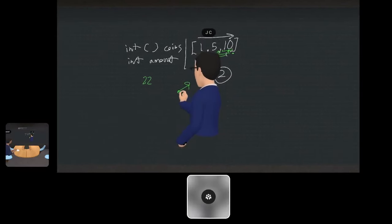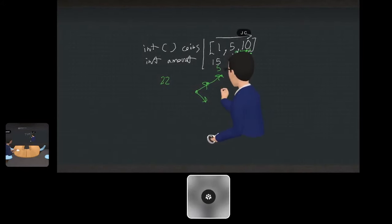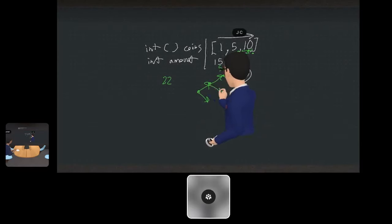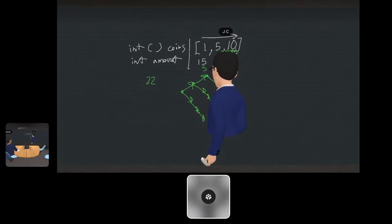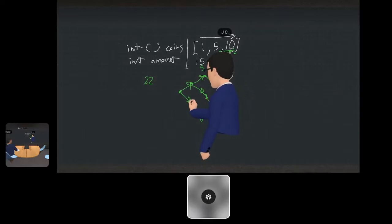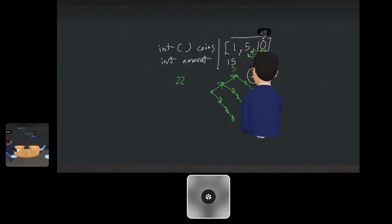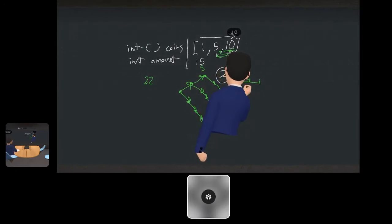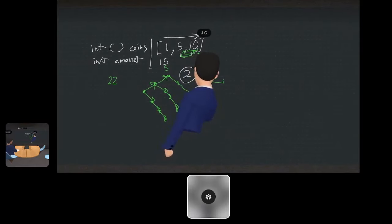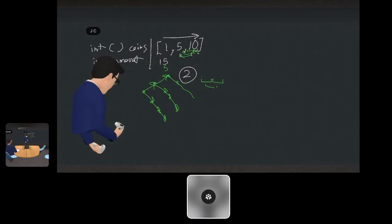At every step we could choose to either take the current coin or move on to the next coin. There's basically a sequence of decisions — continue taking from this coin type or move to the next — and we'd be building a decision tree of degree two. You either keep exploiting the current coin or you move on. This can be implemented recursively and then we cache the subproblems. Once you have that, the complexity is basically the set of subproblems you can encounter.